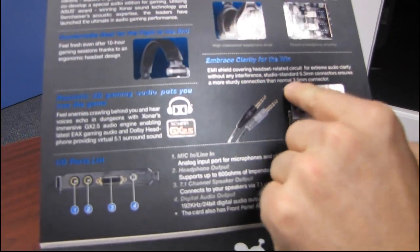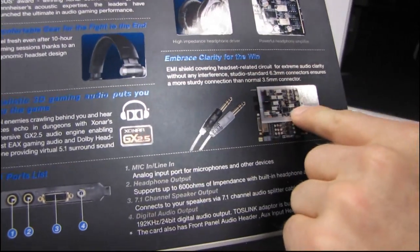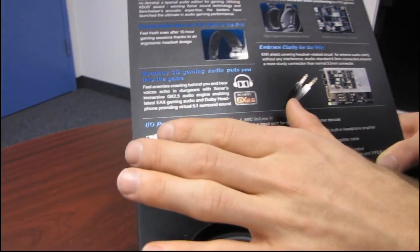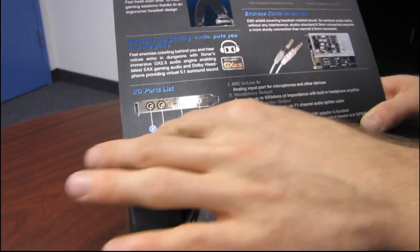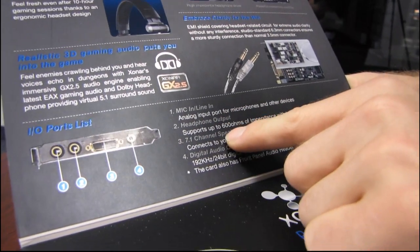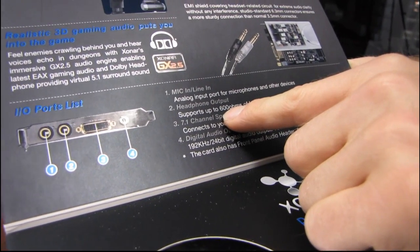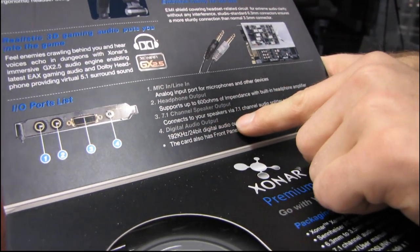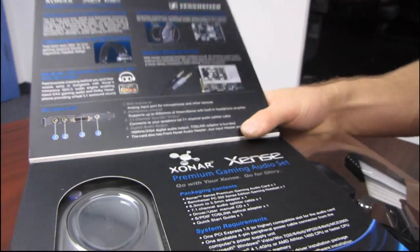Embrace clarity for the win. So EMI shielding covers it so that you don't have sort of random interference bothering your sound card. Realistic 3D gaming audio. Here's your I/O ports list right here. So we've got a mic line in, headphone output with support for up to 600 ohms of impedance. Nice. 7.1 channel speaker output as well as digital audio output. So we've got the whole works.